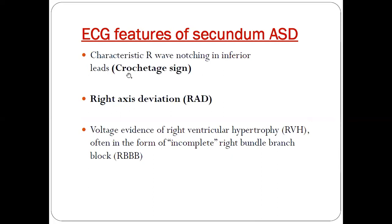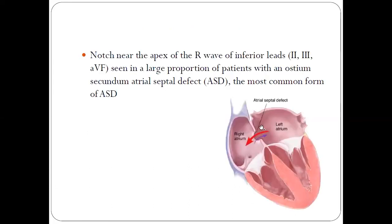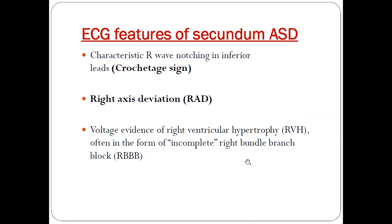The ECG features of secundum ASD: the characteristic feature is the Crochetage sign. Other than that, there will be right axis deviation because blood is going from the left side of the heart to the right side, so more blood goes to the right side, leading to dilatation of the right atrium and right ventricle, which will produce right axis deviation, right ventricular hypertrophy, and right bundle branch block.